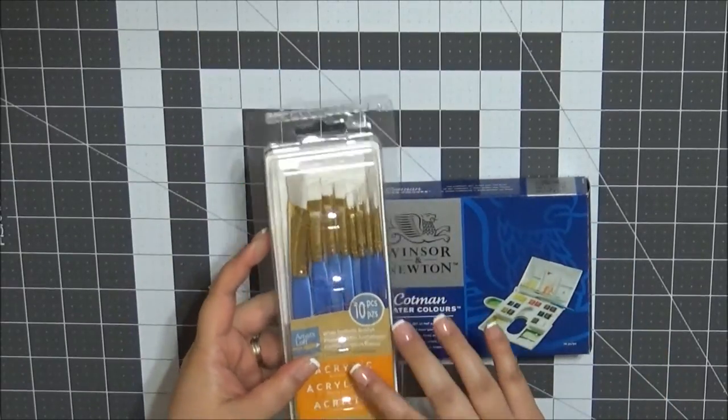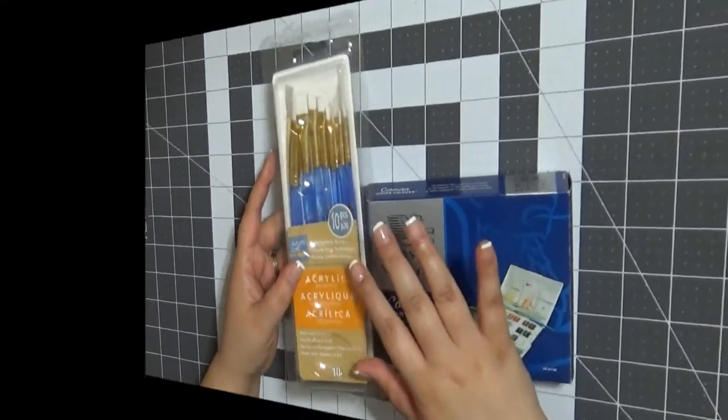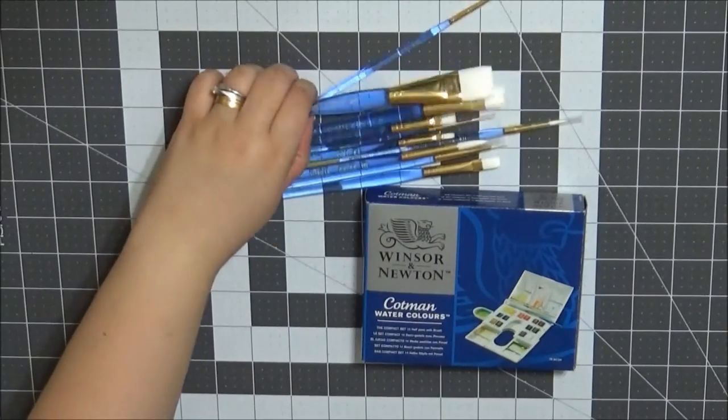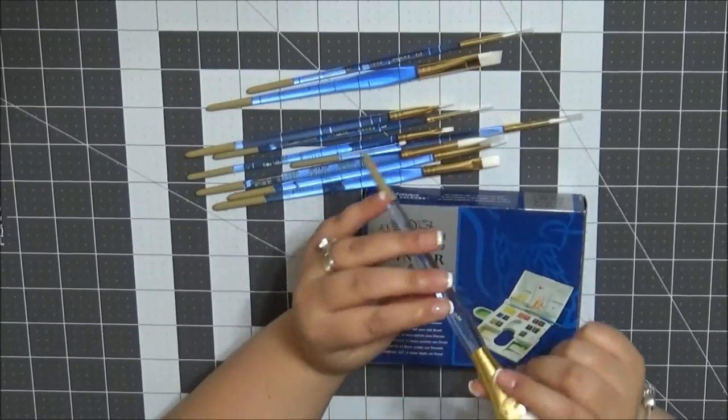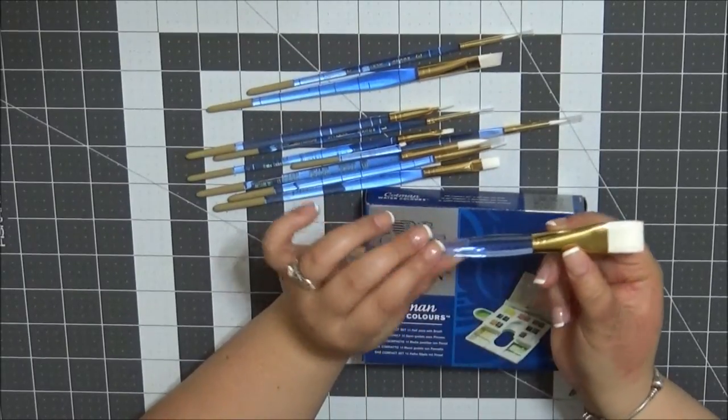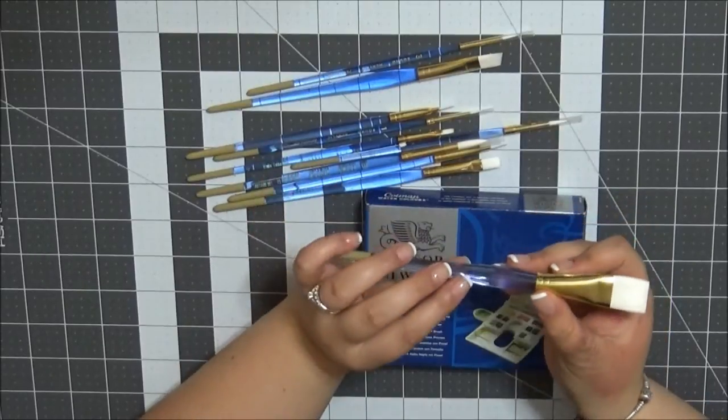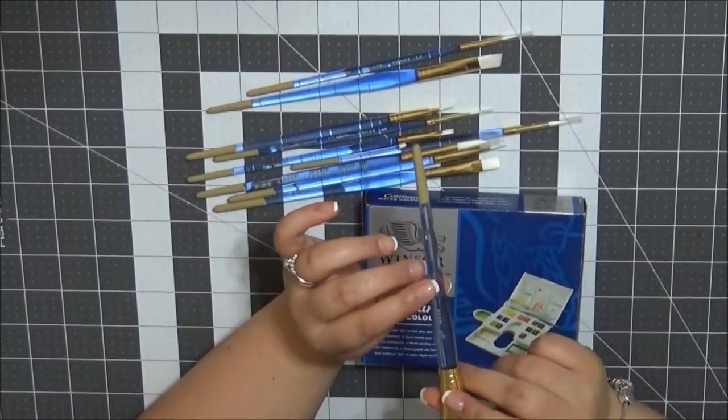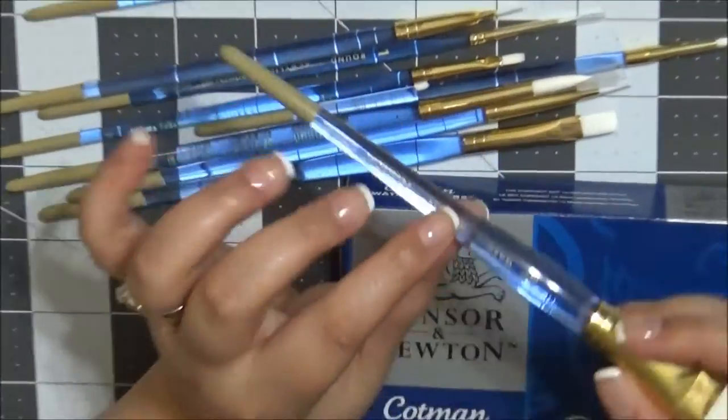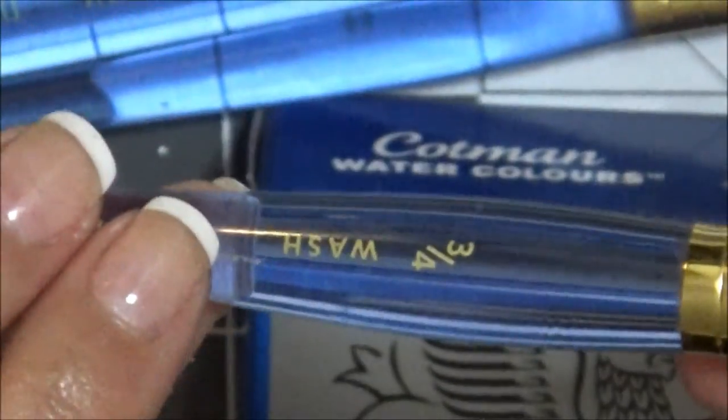There are 10 paintbrushes in this set. They're very durable. They have a nice plastic handle with a rubber end and each brush has their size or their type whether they're round or in this case a three-quarter wash acrylic brush.